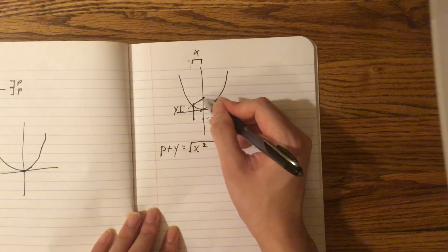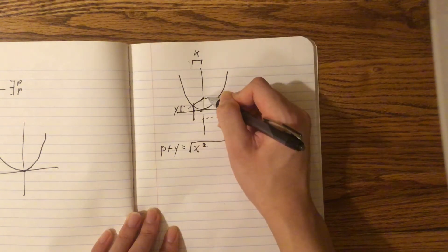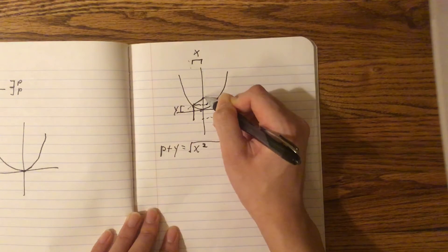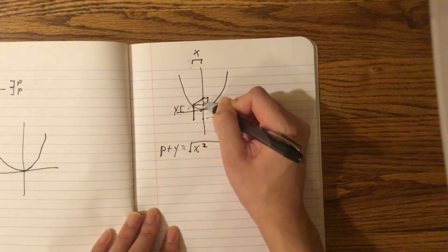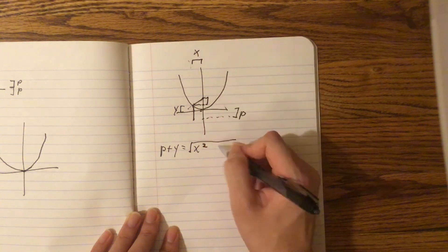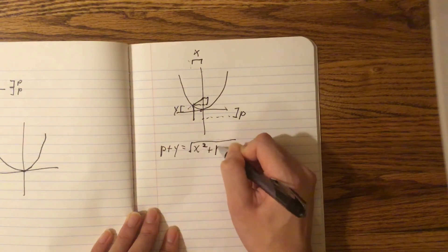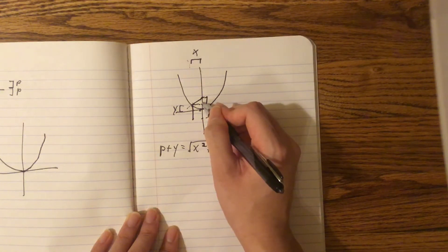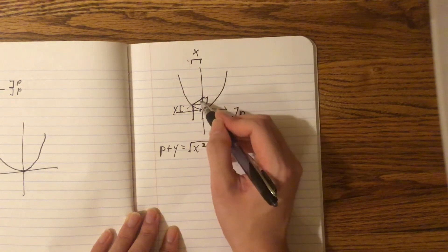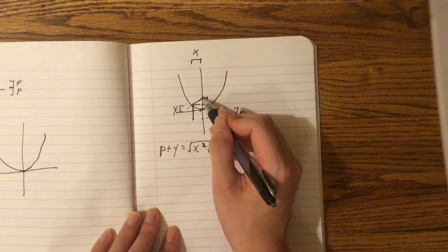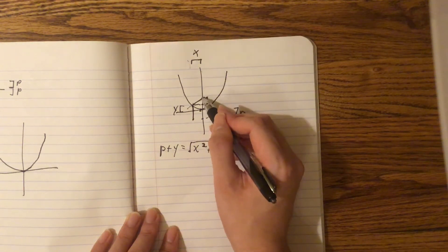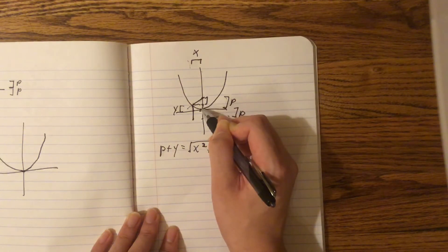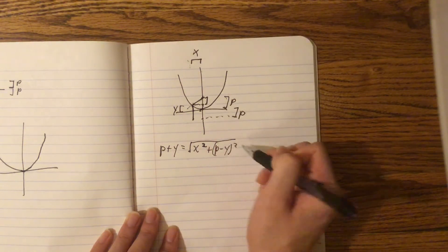And then, what's the height? Well, this is p, and this is y, and we're trying to find this distance from here to here. Well, that's just p minus y. Hopefully you can see that. This distance from here to here is the height of the triangle, and we're trying to use Pythagorean's Theorem. From here to here is p, and from here to here is y, and that means from here to here is p minus y.